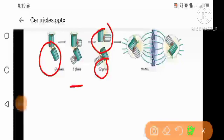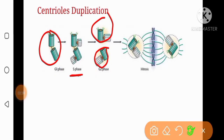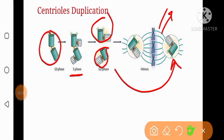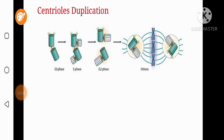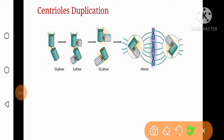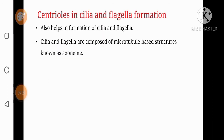One pair of centrioles migrates towards the opposite side of the nucleus, and then the centrioles form thread-like structures known as spindle fibers. These spindle fibers attach to the chromosomes and help in cell division. As you can see in the diagram, spindle fibers are attached to the chromosomes and pull them apart towards the opposite poles.